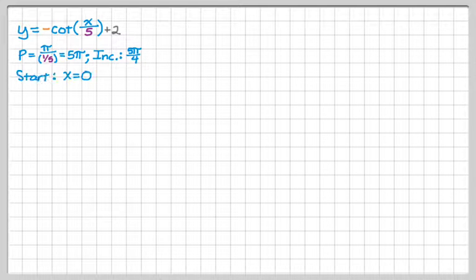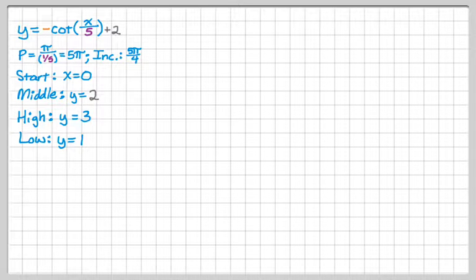So let's take a look at one cotangent graph. y equals negative cotangent of x over 5, and then the whole thing plus 2. So to get the information, we need the period. That's going to be π divided by 1 fifth, which is 5π. The increment is the period divided by 4, so 5π over 4. The starting point is just x equals 0. So we have x over 5 equals 0, but that just gives you x equals 0. The middle point is y equals 2. I can go up 1 to get to the high point. I can go down 1 from 2 to get to the low point. And then since A is less than 0 and it's cotangent, the pattern is going to be asymptote, low, middle, high, asymptote. And now I am pretty ready to graph.